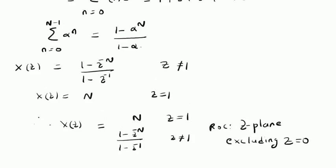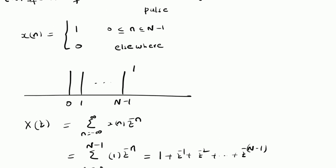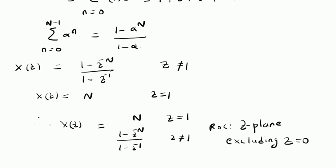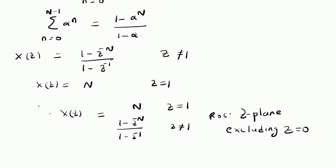To summarize, we have derived the Z transform of the rectangular pulse or a discrete rectangular pulse of length N. We directly applied the definition of the Z transform and saw that the Z transform is basically a polynomial of Z power minus 1 of degree N. By using the definition of the geometric series of finite duration — that is, the sum from n equal to 0 to N minus 1 of alpha power n equals 1 minus alpha power N divided by 1 minus alpha, where alpha becomes Z power minus 1 — therefore X of Z equals 1 minus Z power minus N divided by 1 minus Z power minus 1 for Z not equal to 1, and X of Z equals N for Z equal to 1. The ROC is the whole Z plane excluding the origin.